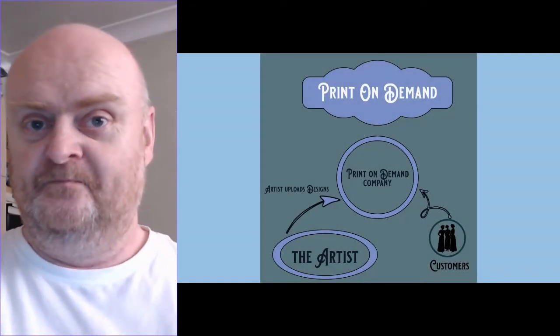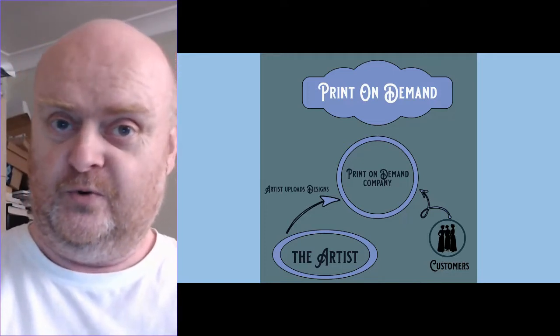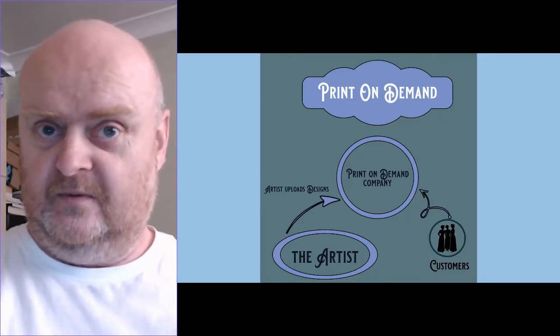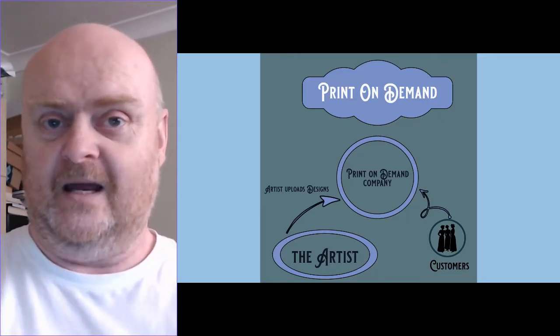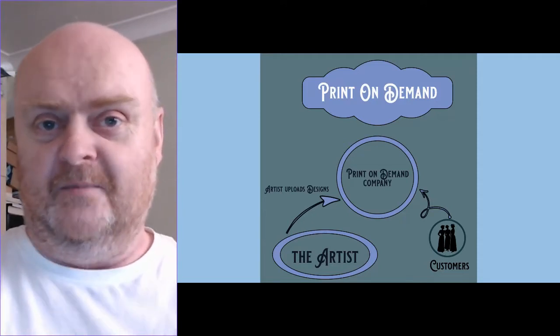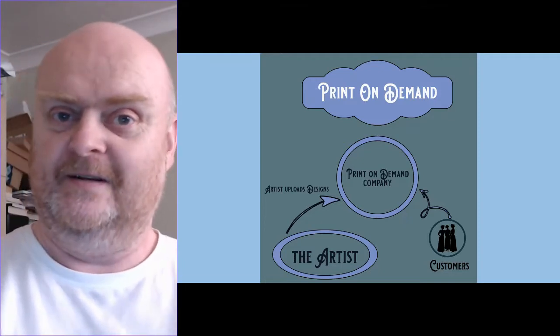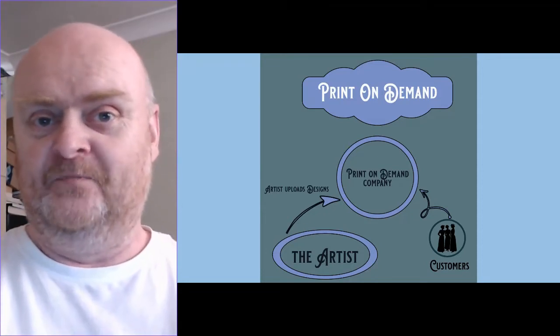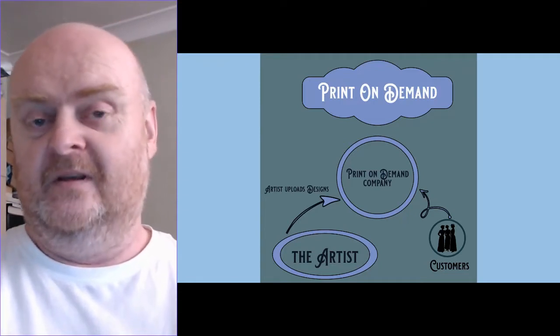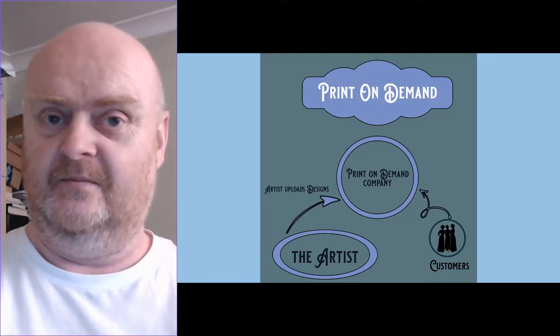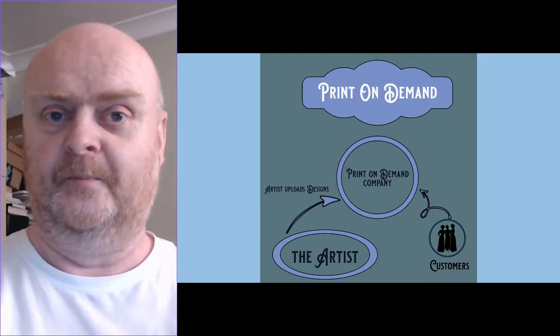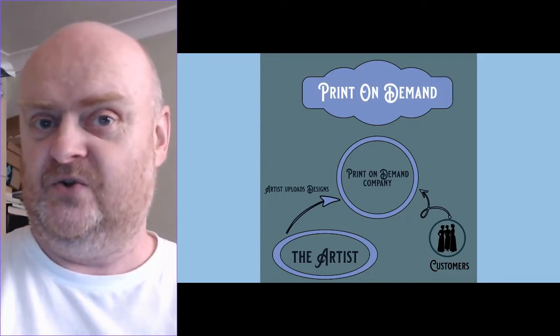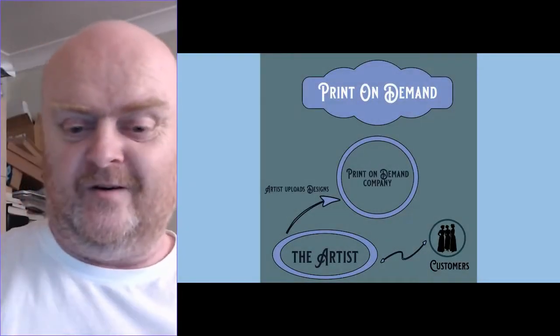The first business model is pretty straightforward. As the artist, you don't have to do very much — all you do is create designs and upload those to the print on demand company's website. Customers can then go to that website, see different designs and products, choose something they like, and buy it. The company manufactures the product, ships it to the customer, and handles all customer care. Every time one of your designs gets sold, you earn a small royalty.